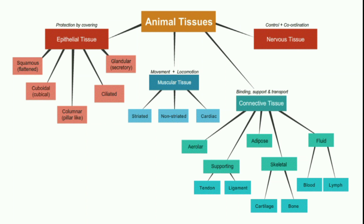There are four types of animal tissue: first is epithelial tissue, second is muscular, third is connective, and fourth is nervous tissue. Epithelial tissue is for protection and is the outer covering of the animal. It is further divided into five types: squamous, cuboidal, columnar, ciliated, and glandular.